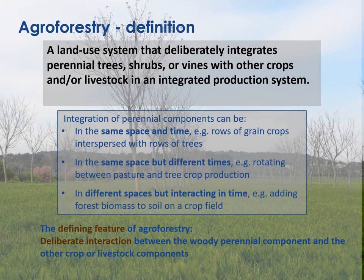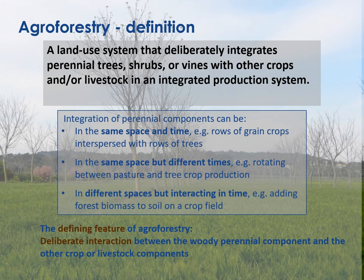Agroforestry is generally defined as any land use system that deliberately integrates woody perennial trees, shrubs, or vines with other crops and/or livestock in an integrated production system. This integration of perennial components can be in the same space and time, in the same space but at different times, or in different places but interacting in time. The defining feature of agroforestry is that there is some deliberate or planned interaction between the woody perennial components and the other crop or livestock components. Merely having an orchard in one part of the farm and a pasture on another does not make it an agroforestry system unless there is some biophysical interaction between the two.